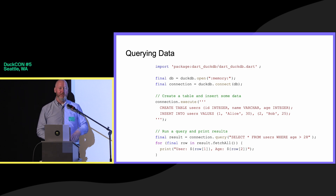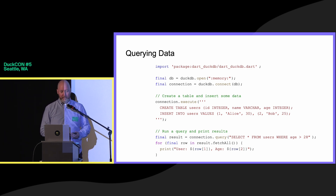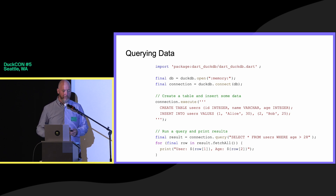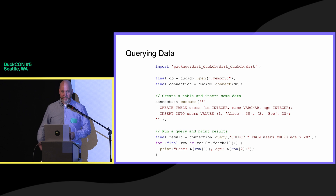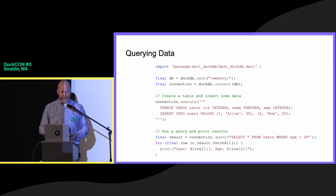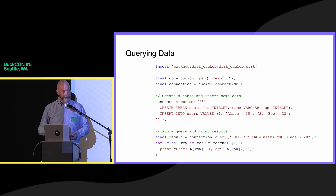Let's take a look at some examples — how do you query data? Unsurprisingly, you import the package, create a database. In this case, we're opening one in memory, create a connection to that database, and then you're off to the races. The connection is where you do everything: your queries, your executes, things like that. In this example, creating a table, inserting some values, and then querying it. What comes out are integers and strings and all the native Dart types.